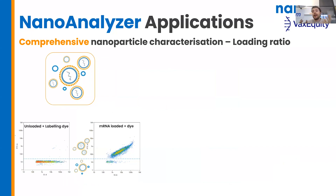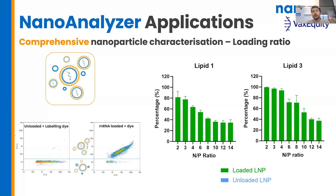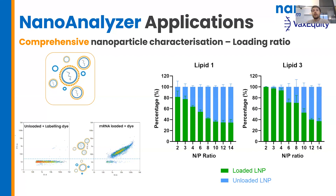This is where the additional data from nanoflow cytometry comes into play, and we start looking at the loading ratio of these particles. In both formulations using ionizable lipid one or ionizable lipid three, we can see this trend: as we increase the MP ratio — so more lipid to RNA — we get a reduction in the proportion of loaded particles. George pointed out that it might actually be better to describe this in terms of the proportion of unloaded material — the unloaded LMPs.